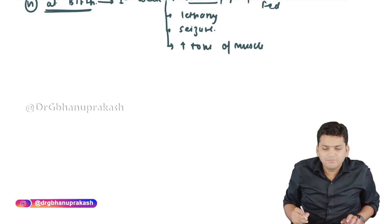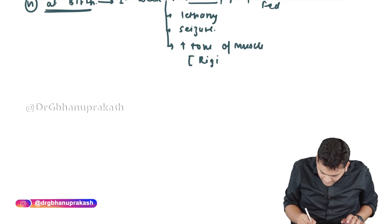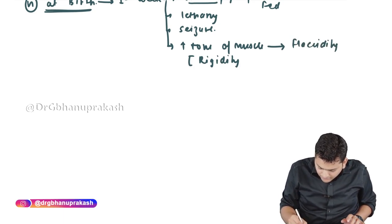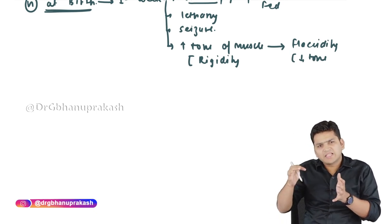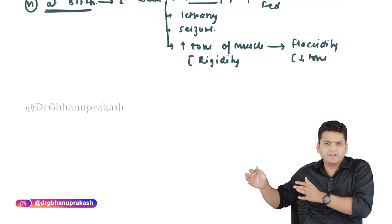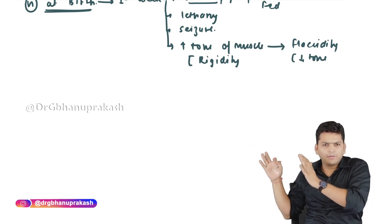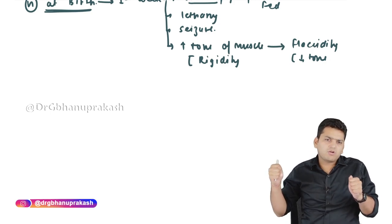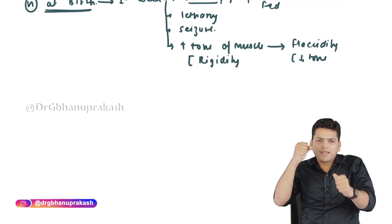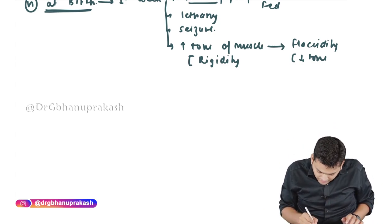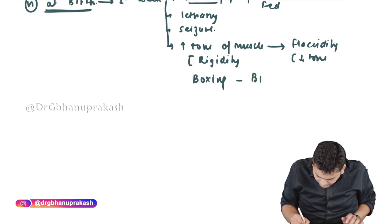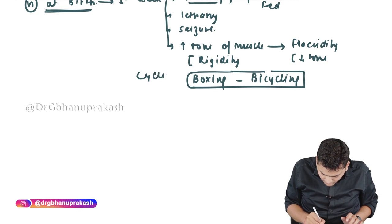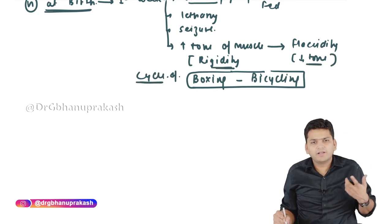Another very characteristic feature of MSUD is alternating cycles of increased muscle tone (rigidity/hypertonia) followed by decreased tone (flaccidity/hypotonia). This alternating pattern is called boxing and bicycling: boxing refers to the increased tone posture, and bicycling refers to the flaccid phase. These alternate in cycles.